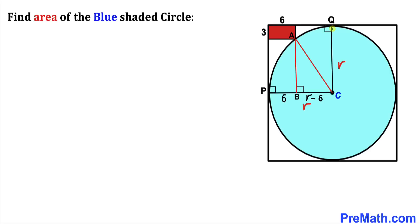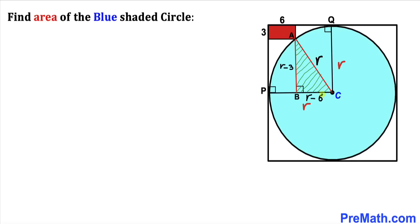Now let's focus on the other radius r. We know this length is 3 units, so this segment is r minus 3. And AC is our radius r as well. So the side lengths of triangle ABC are r minus 3, r minus 6, and r.